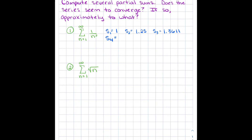The fourth partial sum is 1.4236. We're growing, but will it ever stop growing? The fifth partial sum is 1.46361. So it looks like we're growing still, but it seems like we're slowing down. Let's skip ahead and look at the 50th partial sum — your calculator is doing all of this anyway — and that gives 1.625.